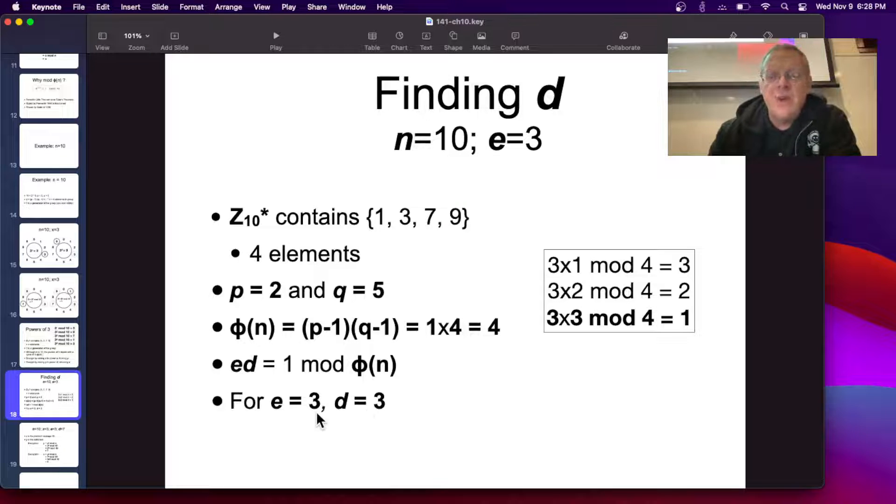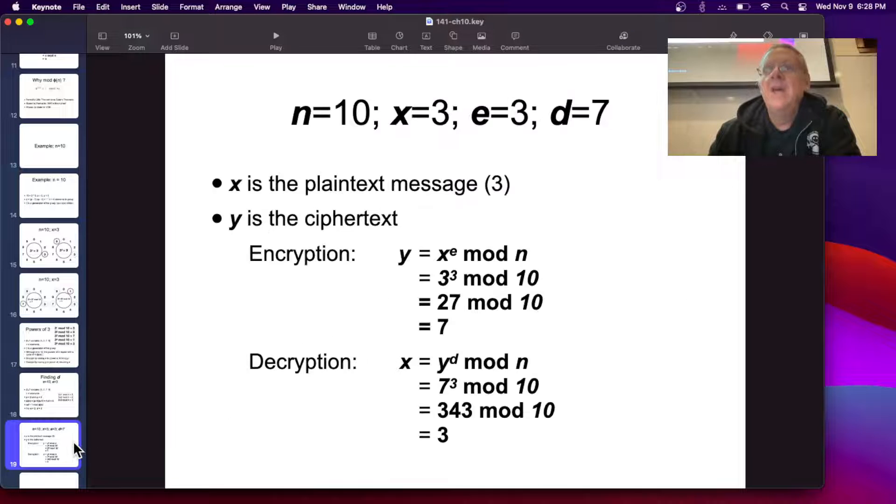So you can encrypt a message by raising it to the 3rd power, and you can decrypt it by raising it to the 3rd power again. So if I have a message, and my message is, say, 3, I encrypt it by taking 3 to the 3 mod 10, which is 7. So the encrypted message is 7, but to decrypt it, I take 7 to the 3 mod n, that's 343 mod n, that's back to 3. So that's the game, and of course with these small numbers of n, you're not accomplishing anything, but it shows you how it works.